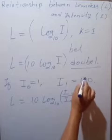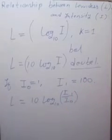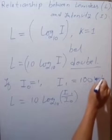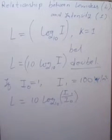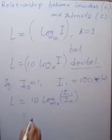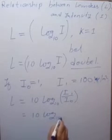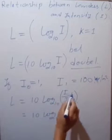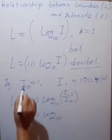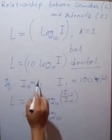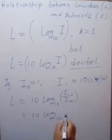Intensity is 100 or 100 Watt. Or unit of intensity is Watt per meter square. Now this will be equals to 10 into log. I1 is 100 and I0 is 1. So this value 100 divided by 1 will be 100.